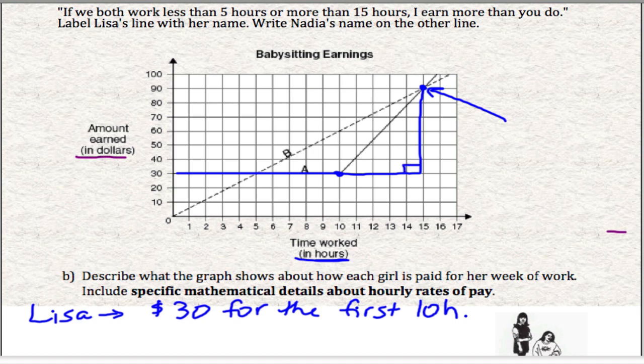Rise over run from 90 to 30. That's a difference of 60. And how many hours is that? From 10 to 15. That's 5 hours. So if I take $60 divided by 5 hours, I actually get $12 per hour.